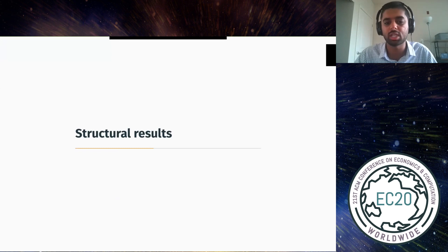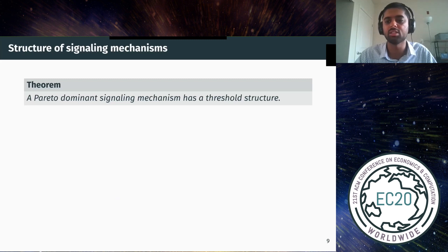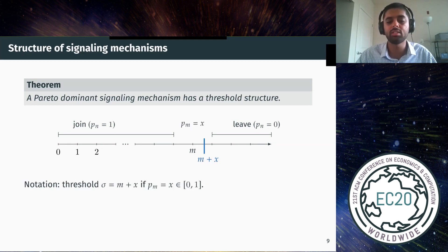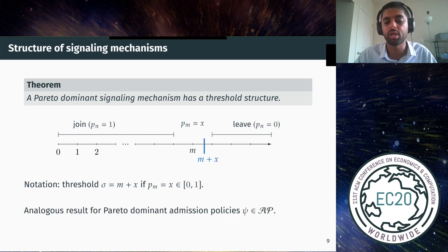Regarding structural results: we show that a Pareto dominant signaling mechanism has a threshold structure. This means there is a threshold such that below it, a low-need user joins with probability one; above it, they join with probability zero; and at the threshold they may mix. If they mix with probability x, we denote the threshold as m+x. An analogous result holds for Pareto dominant admission policies using a similar proof structure.